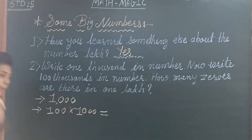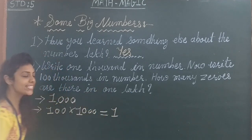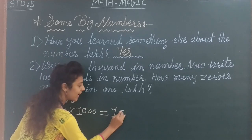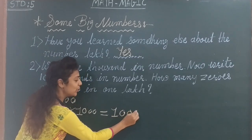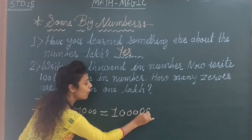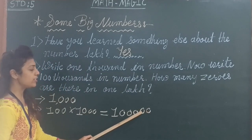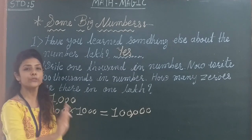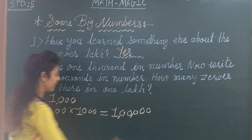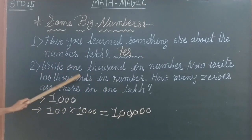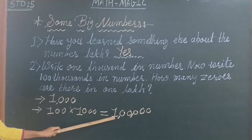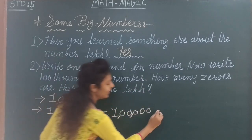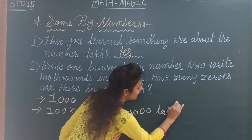One thousand — so how to write one thousand? And how many zeros? One, two, three, four, five. So we will write one, two, three, four, five zeros. After every three digits we will write a comma. So hundred thousand — hundred thousand is equal to one lakh.